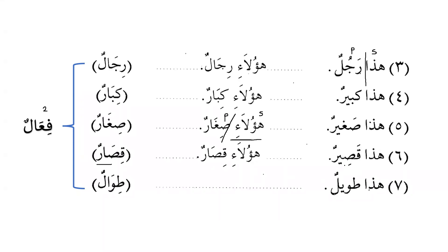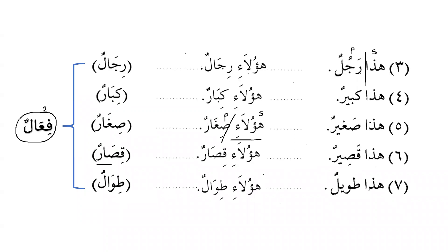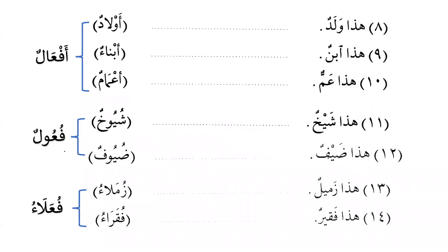In Arabic, adjectives have plurals: كبيرون, صغيرون, قصيرون, طويلون. In English 'big', 'small', 'short', 'tall' remain the same, but Arabic requires changes. هذا طويل — this is tall — becomes هؤلاء طِوال — these are tall. Practice and memorizing the patterns is essential.